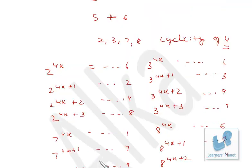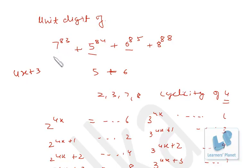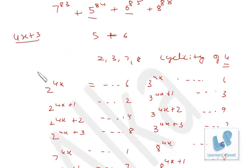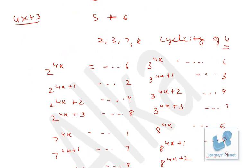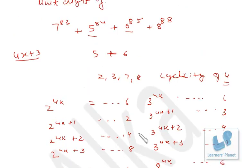Now, for 7 raised to 83: divide 83 by 4 — you get remainder 3, so it is in the 4x+3 form. Therefore 7 raised to 4x+3 ends in 3. Just write 3.